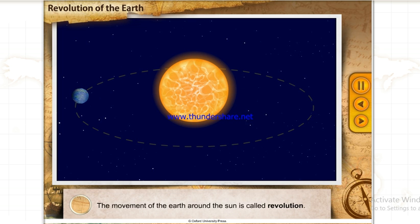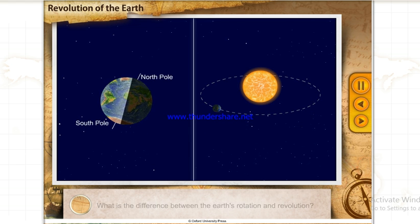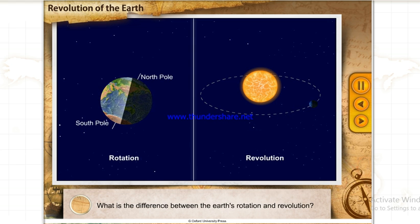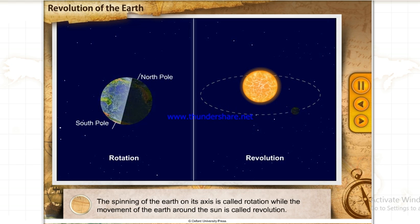The movement of the Earth around the Sun is called revolution. What is the difference between the Earth's rotation and revolution? The spinning of the Earth on its axis is called rotation while the movement of the Earth around the Sun is called revolution.